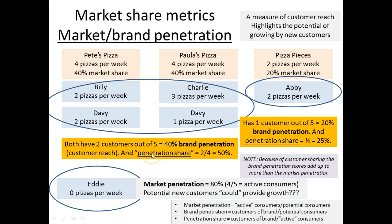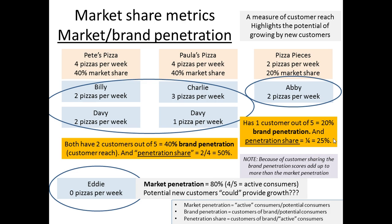The second metric is called penetration share — very similar, except we don't include Eddie. Eddie has not bought; he's part of the target market but he's not an active consumer, he's a non-consumer. When we look at penetration share, which is one of our three components of market share, we only look at active customers — four customers, not counting Eddie. These two stores have two out of four, giving 50% penetration share, and this one has one out of four, giving 25% penetration share.